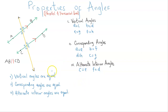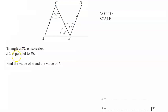The next thing we are going to do is apply these principles to solve a problem. Here is the problem: Triangle ABC is isosceles, AC is parallel to BD. Find the value of A and the value of B. So we've been told that triangle ABC is isosceles.